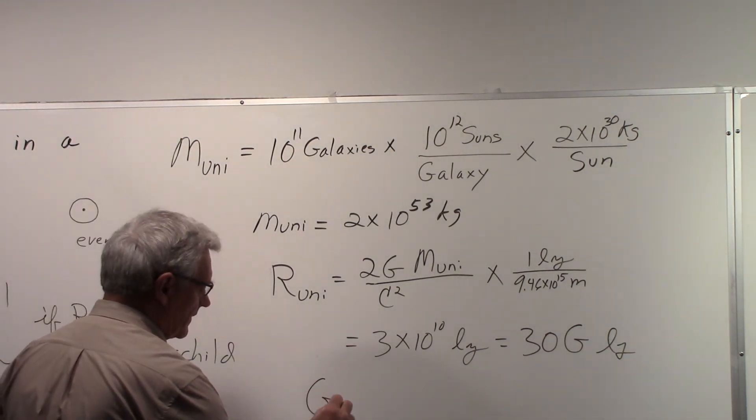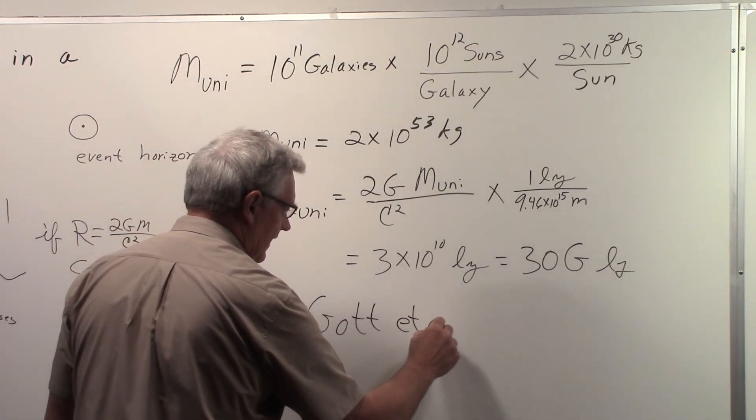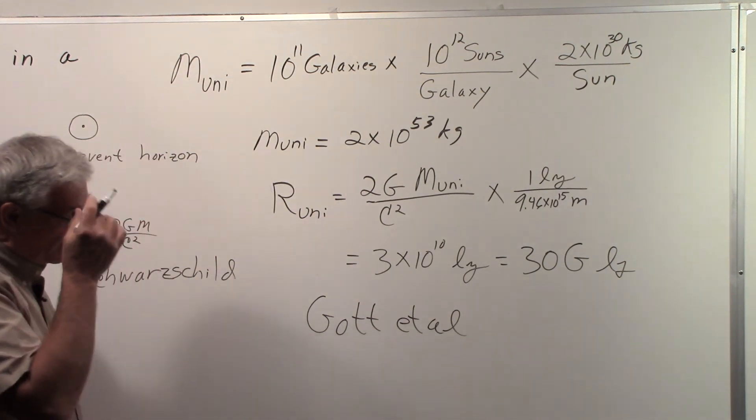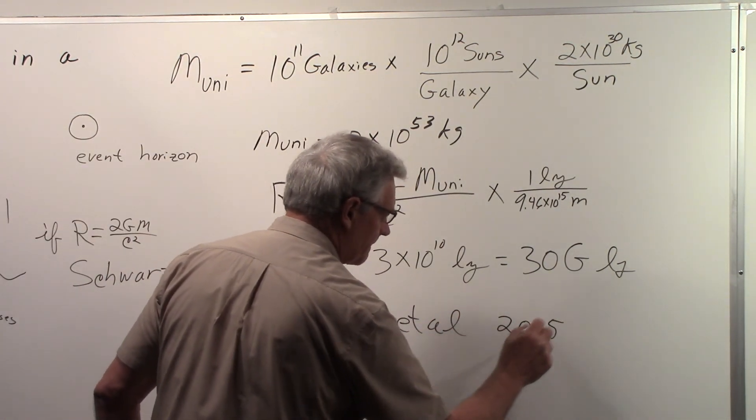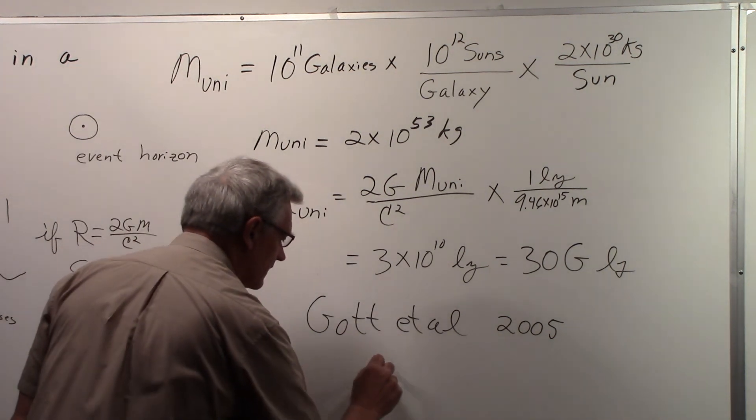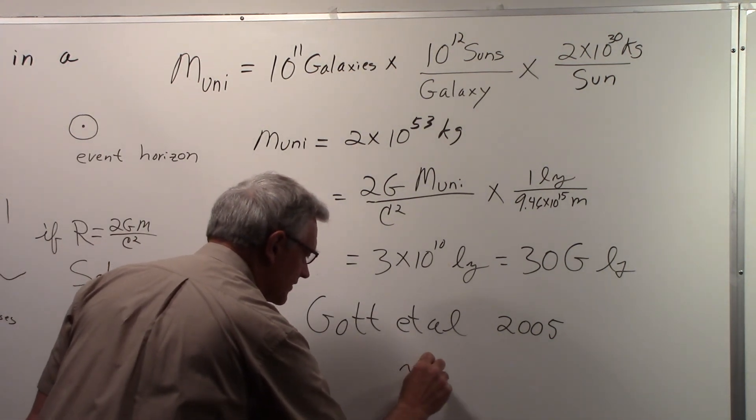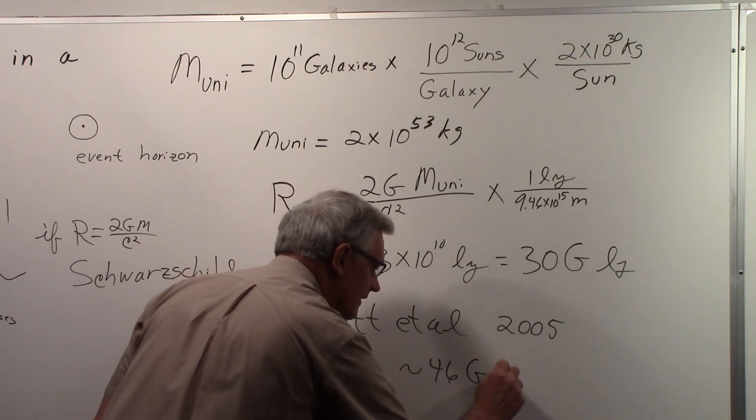And what is the radius of the universe? Well, you can look up work done by Gott et al, I think that was in 2005, and they published an estimate for the radius of the universe to be approximately 46 billion light years.